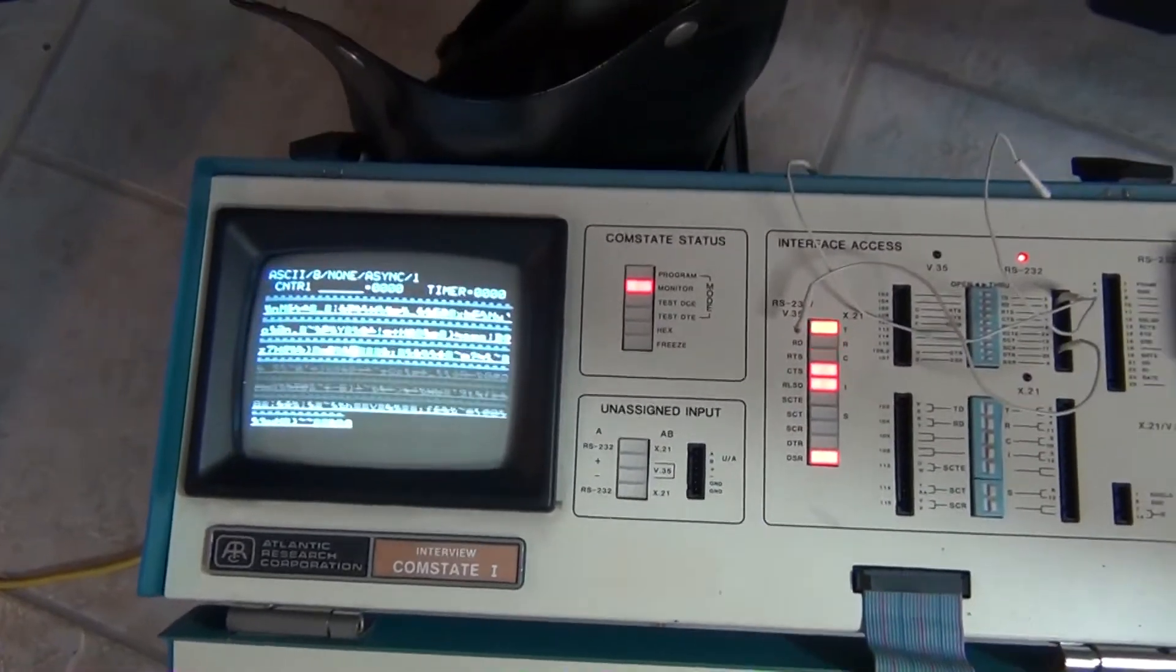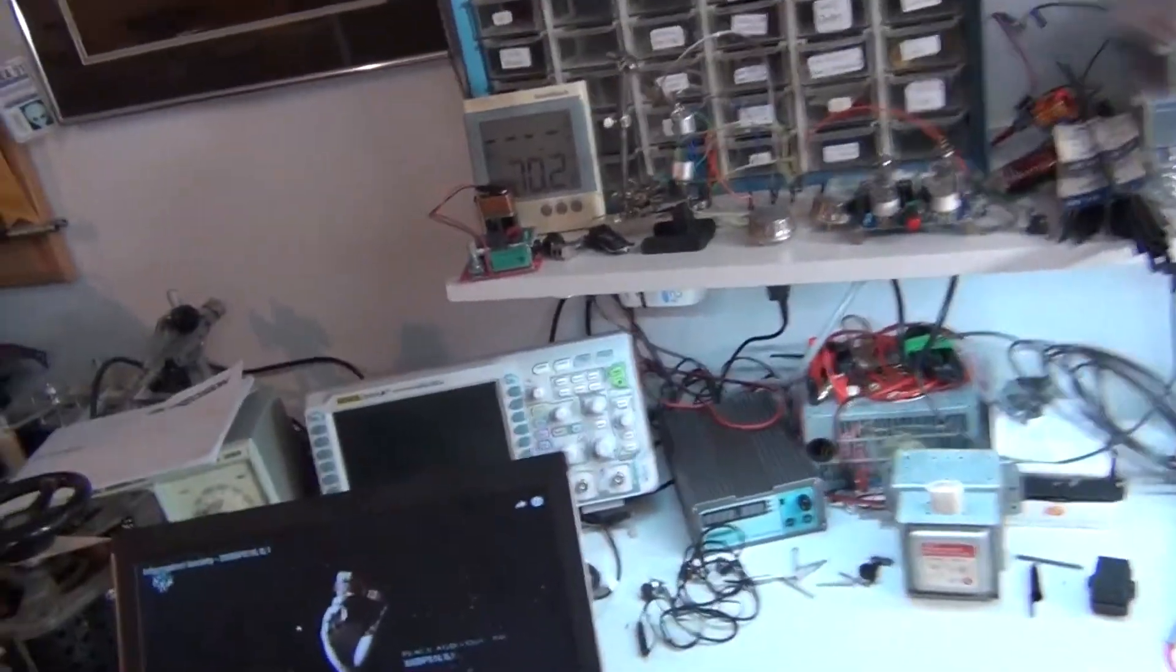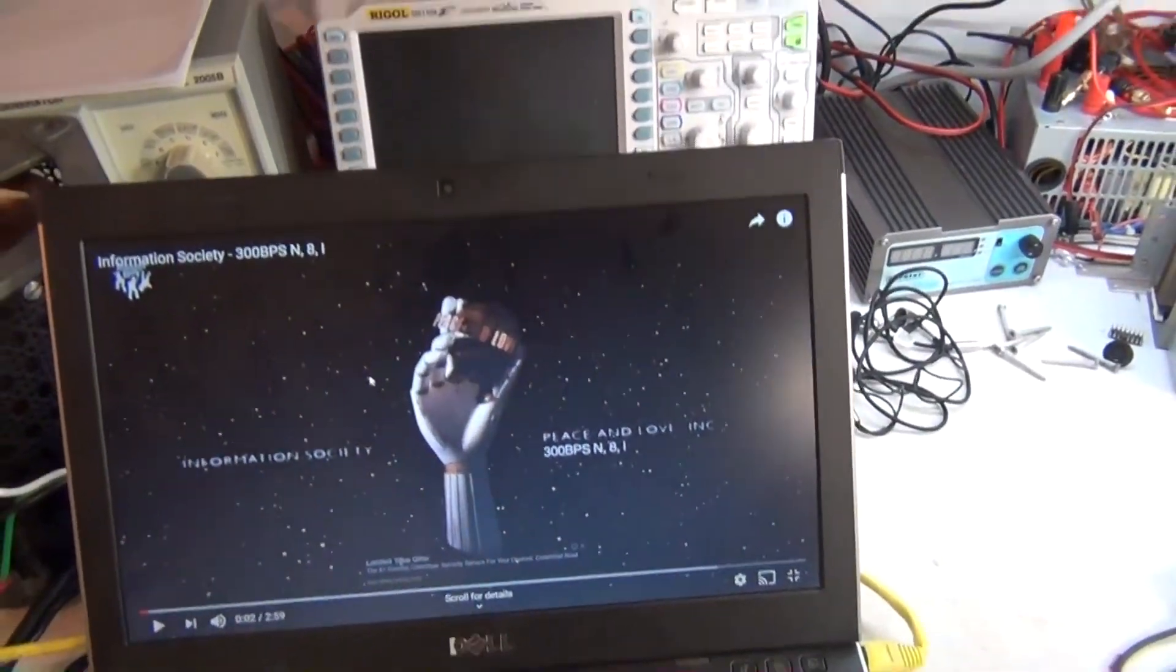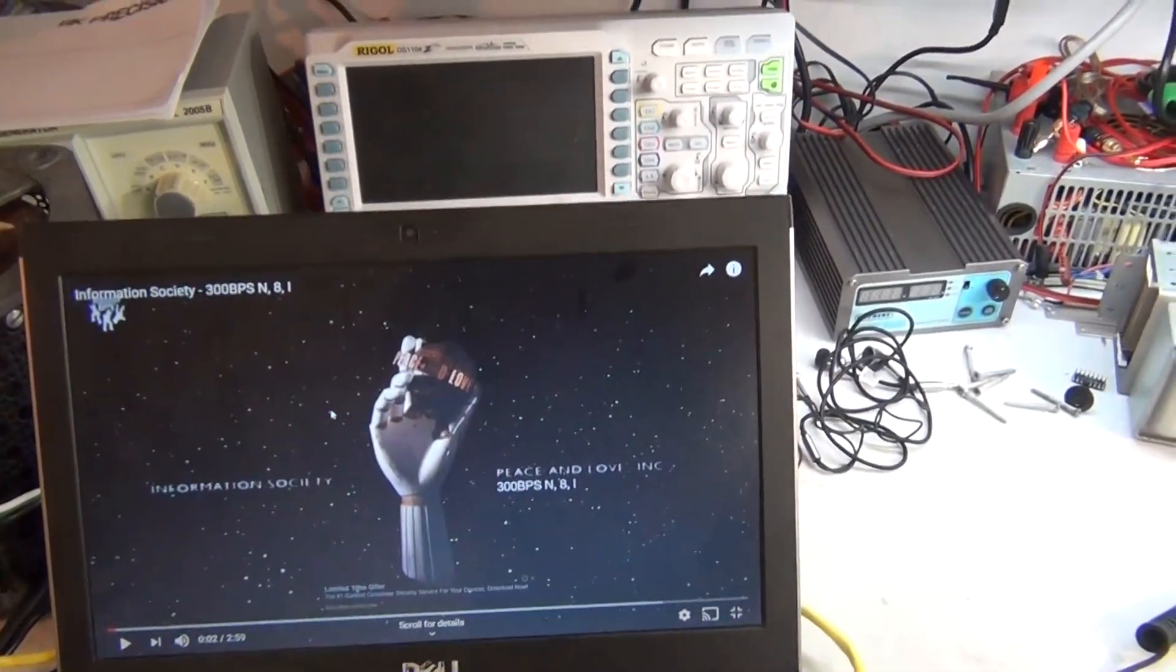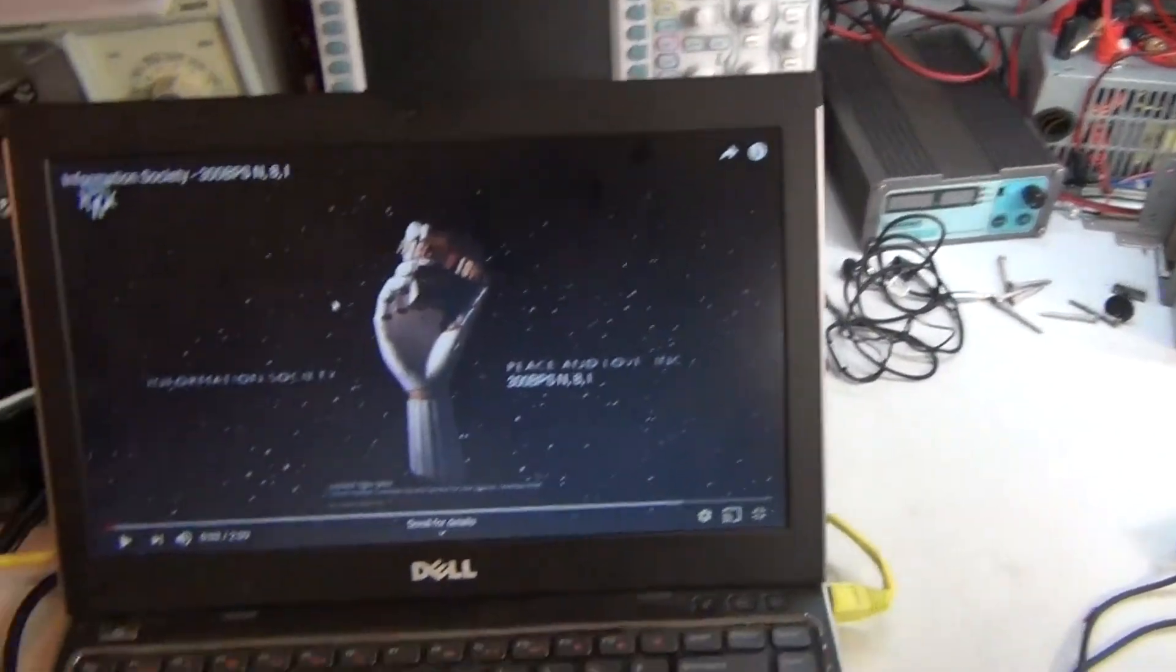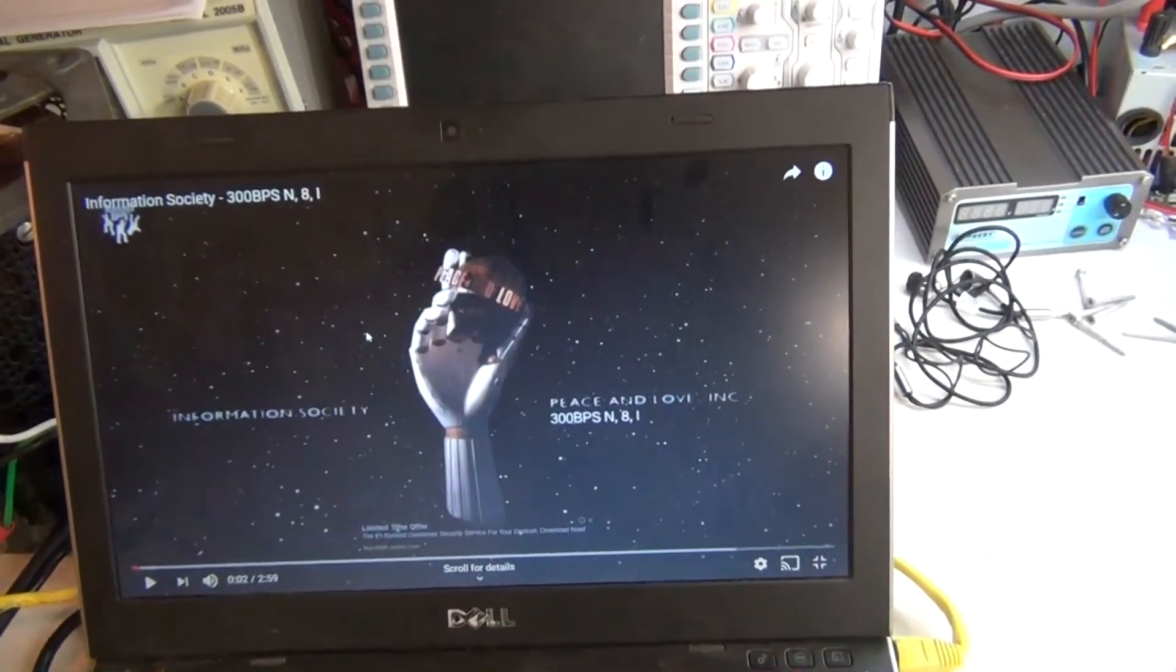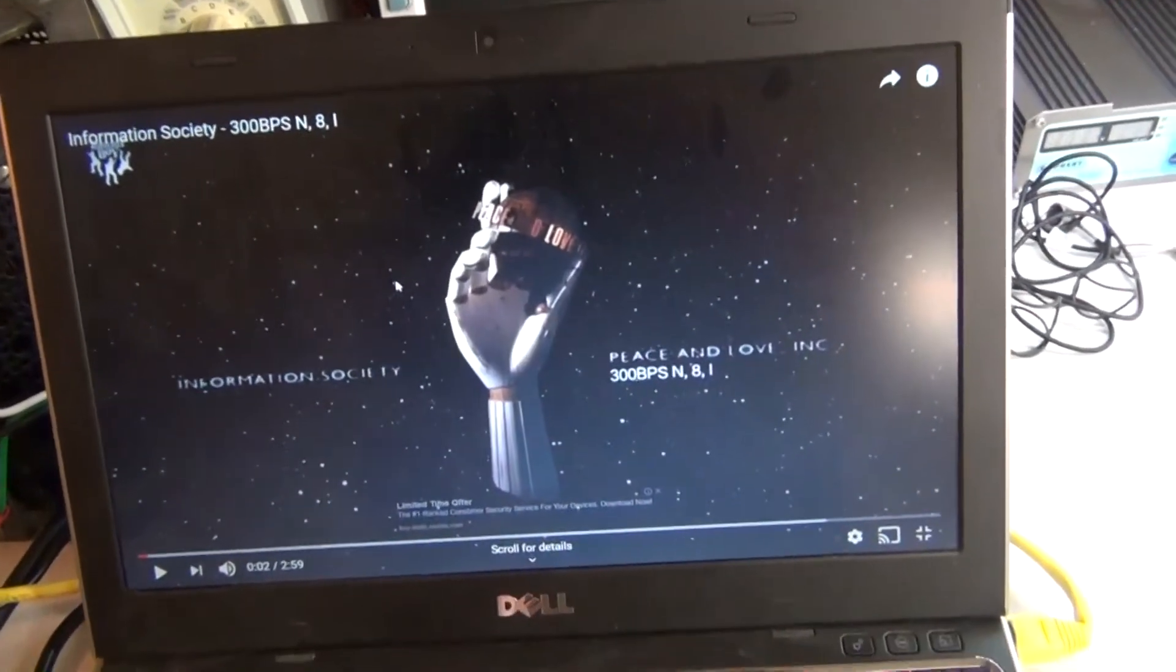So how am I going to find a source that lets me really see if it works? Well guess what, in 1988 a group called the Information Society or ISOC, a synth pop group, the third album that they released, the album is called Peace and Love, and the last track on it was a song that was called 300 bps 8 and 1: 300 bps, 8 bits, no parity, one stop bit.